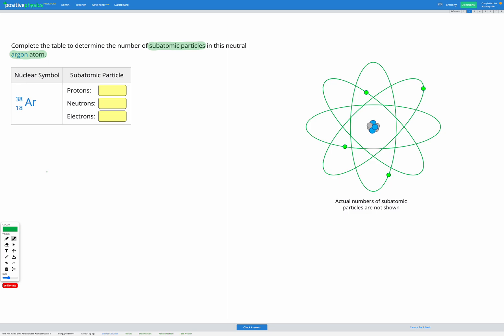And we have our neutral argon atom shown here. So let's draw out that a little bit bigger while we figure out the answer to this question. We have the symbol for argon, AR, and then we have one number on the top and another number on the bottom.